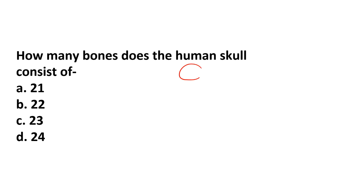Next question: How many bones does the human skull consist of? The human skull refers to the cranium covering that protects our delicate brain inside. The options are 21, 22, 23, and 24. The correct answer is 22 bones — so B is the correct answer.